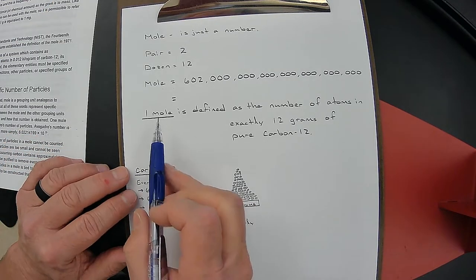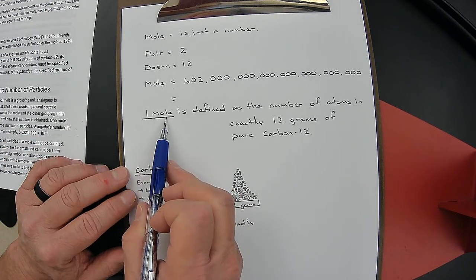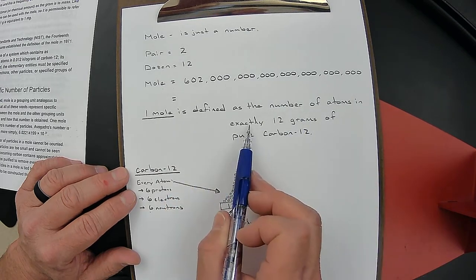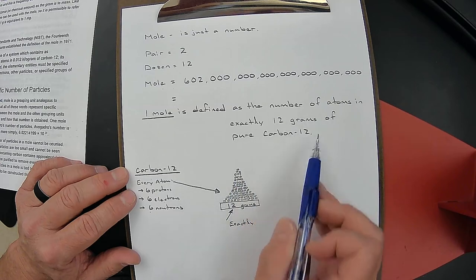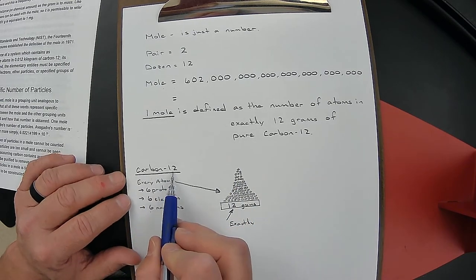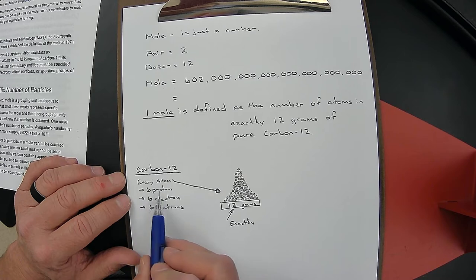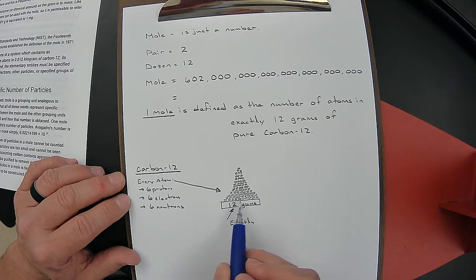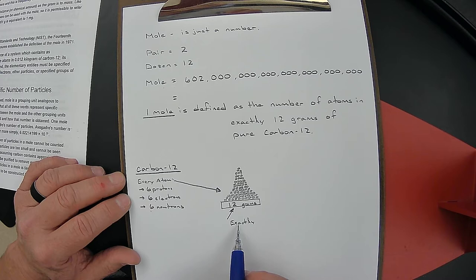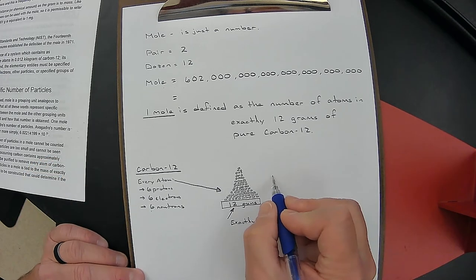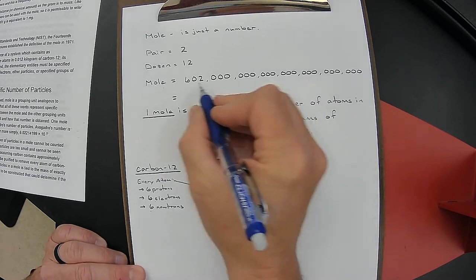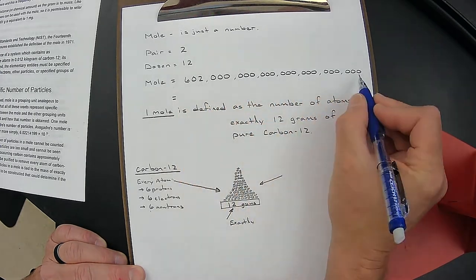We're trying to unpack this definition that one mole is defined as the number of atoms in exactly twelve grams of pure carbon-12. We analyzed what carbon-12 is - an atom with six protons, six electrons, and six neutrons. We're putting them on the balance one at a time until the balance reads twelve grams. How many atoms did we put on there? We put on there 602 billion trillion.